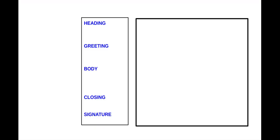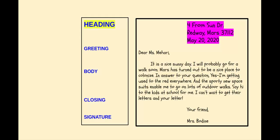Friendly letters are made up of five parts, sometimes called a heading, a greeting, a body, a closing, and a signature. And you want to have this kind of organization so that you have a friendly letter that someone would like to respond to. So let's look at these parts.